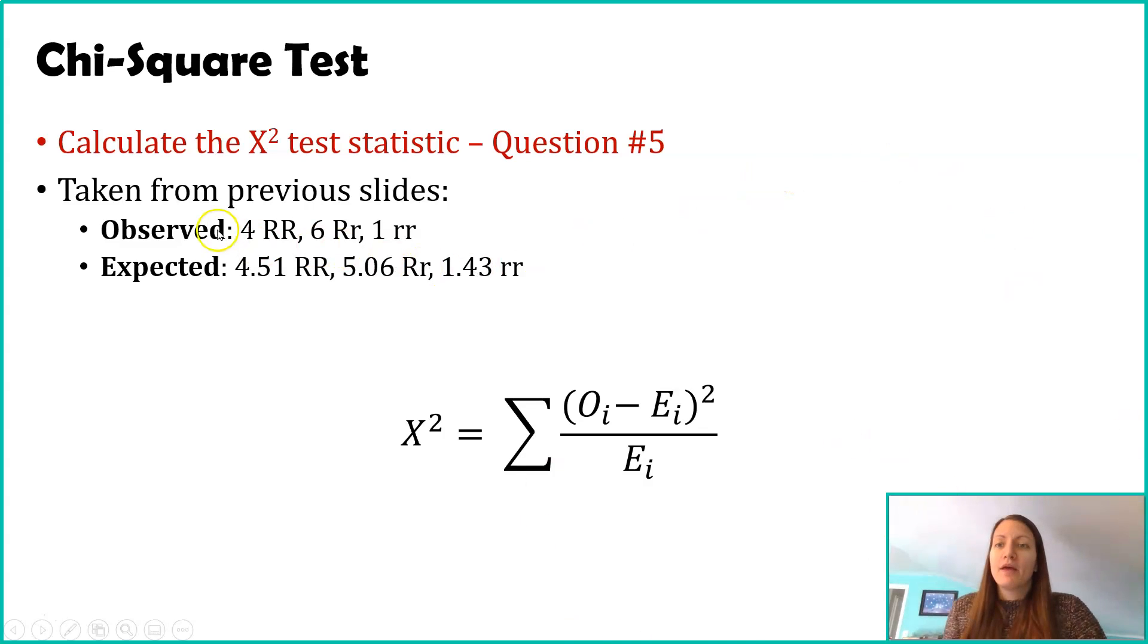Just as a recap, the observed number of snails given to us in the problem were four big R big R, six big R little r, and one little r little r.